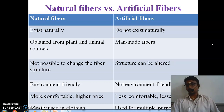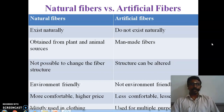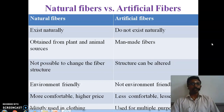Fibers are classified into two major types. One is natural fibers and another one is artificial fibers. Natural fibers are obtained from plants or animals. Artificial fibers are man-made fibers, also called synthetic fibers — they can be manufactured. These are the two major differences between natural fibers and artificial fibers.